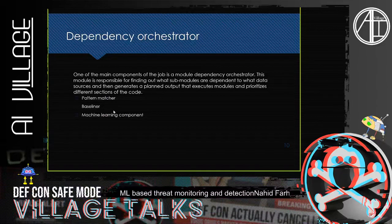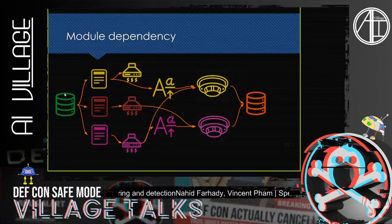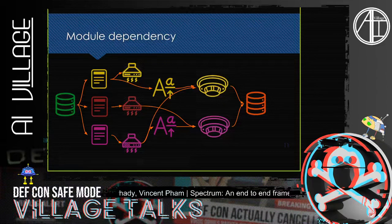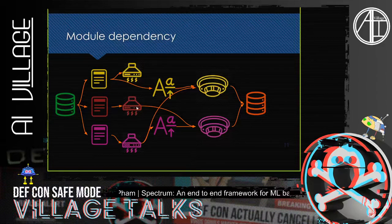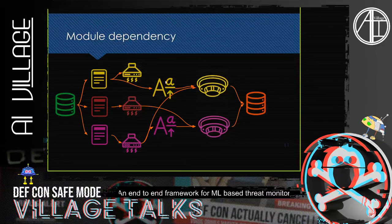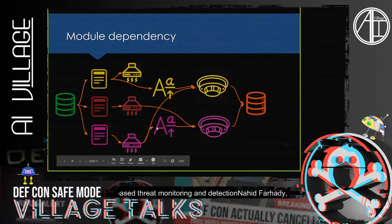Here is an example of module dependency. We read data from our original database, where each color represents an event type — email, proxy, and print. We extract information from each: from email, from print (such as number of pages and printer used), and from proxy. We may then run a baseliner on email events to find the normal daily email volume for a person, or look at upload and download amounts for proxy in a separate baseliner.